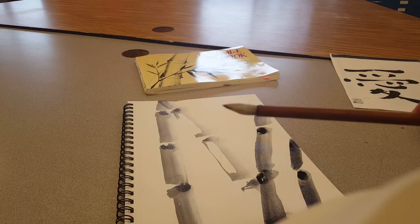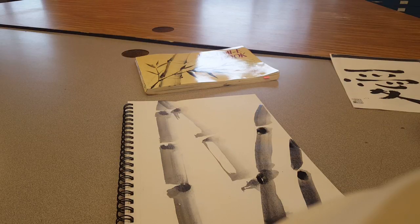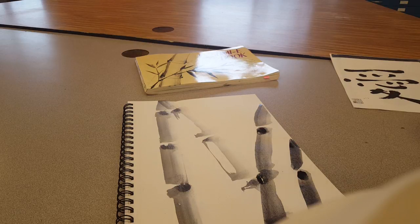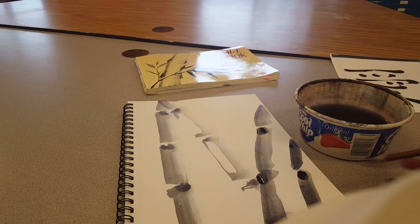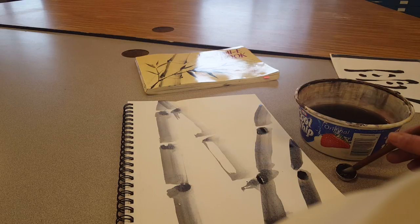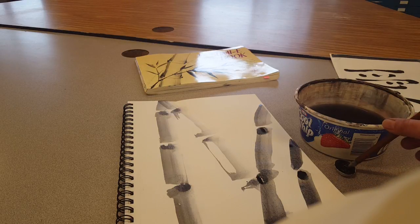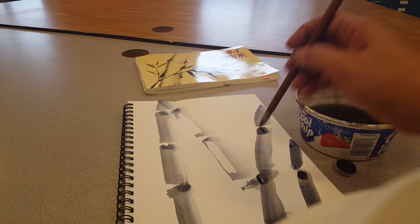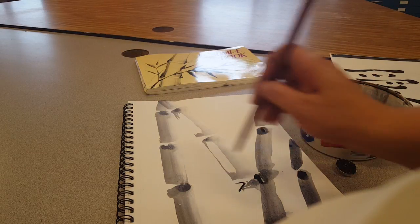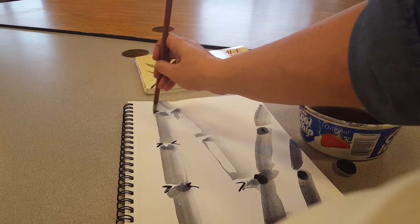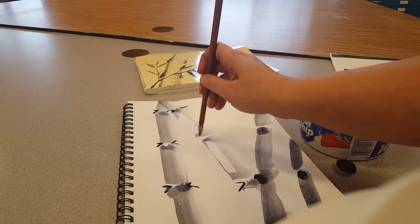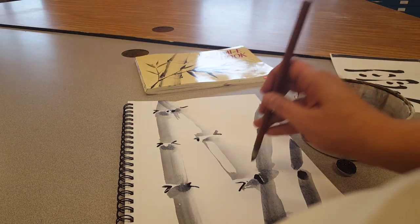With the small brush, dipping it in the water, and dipping it in my ink. I can create the little variations between the bamboo stalks, holding the brush vertically.